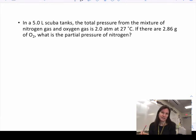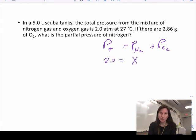If I want to know the pressure due to nitrogen, I know the pressure due to nitrogen plus the pressure due to oxygen is going to be the pressure total. In this problem I told you the pressure total is two. If this is my X, if what I don't know is the pressure of nitrogen, then with the data presented I need to be able to figure out the pressure of oxygen.